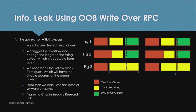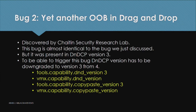This technique was shown by a Chinese Security Research Lab in a blog post. We also saw another identical bug in dndcp version 3. To reach the vulnerable code, an attacker must first downgrade the dndcp protocol from version 4 to version 3 by sending a specific set of RPC commands from guest to host, after which the same exploitation method applies.